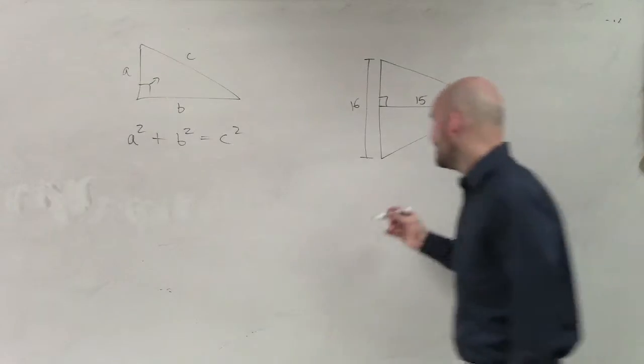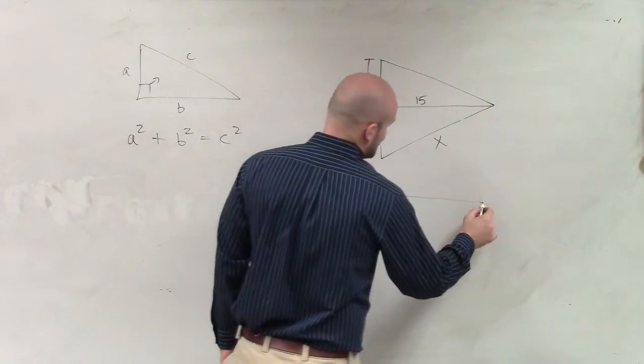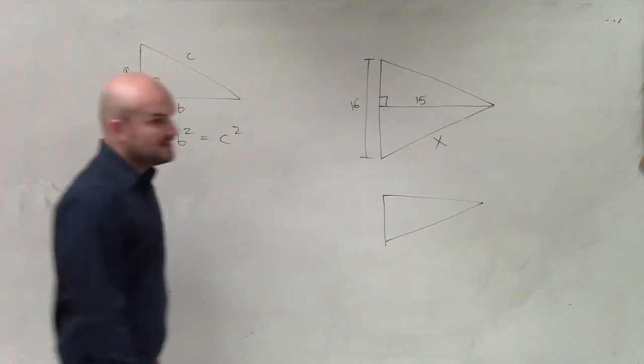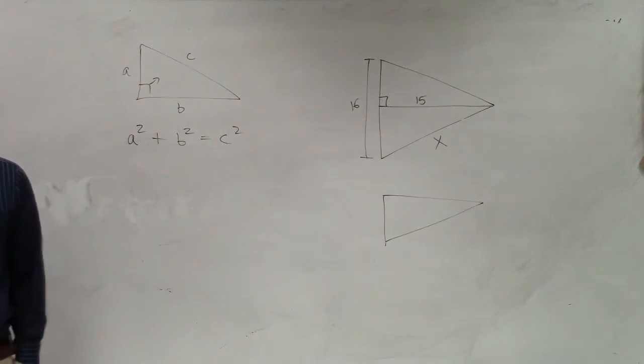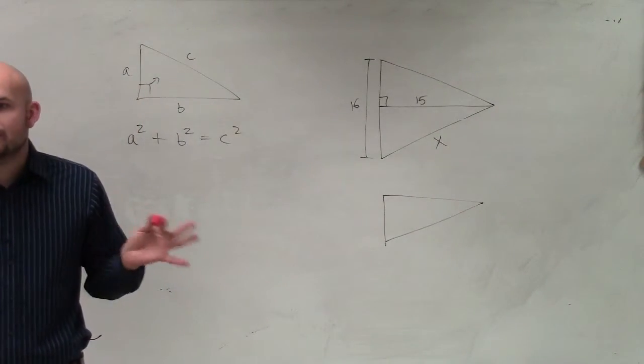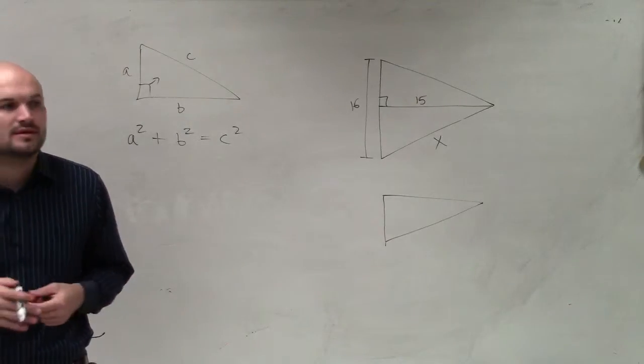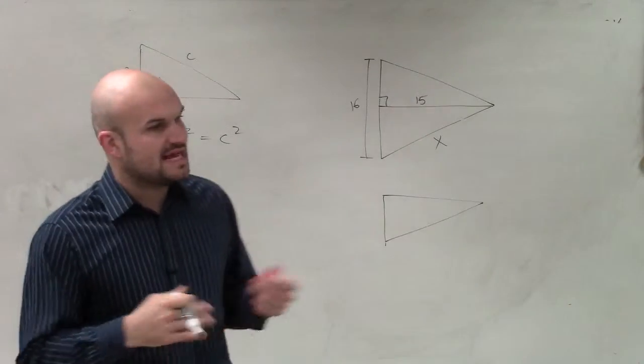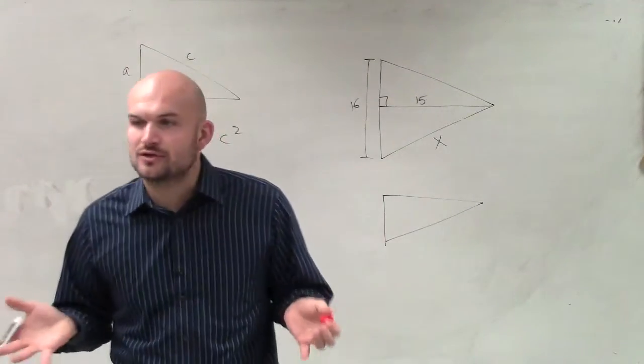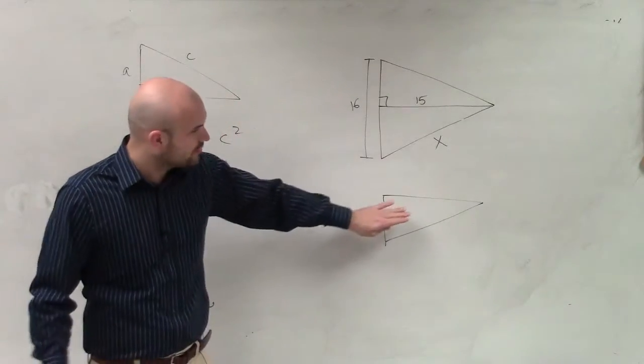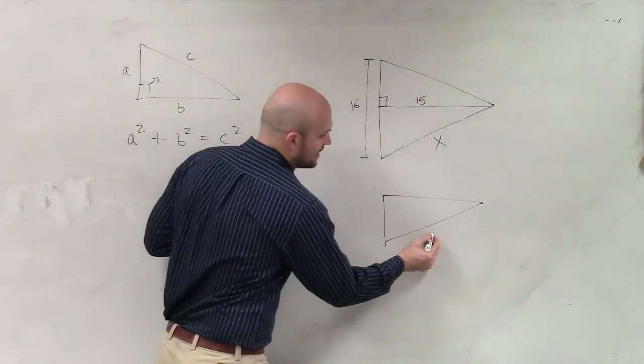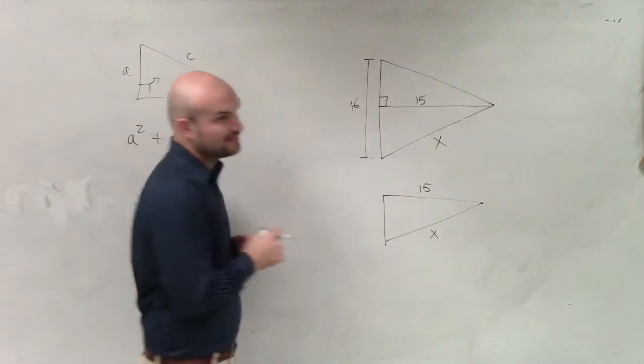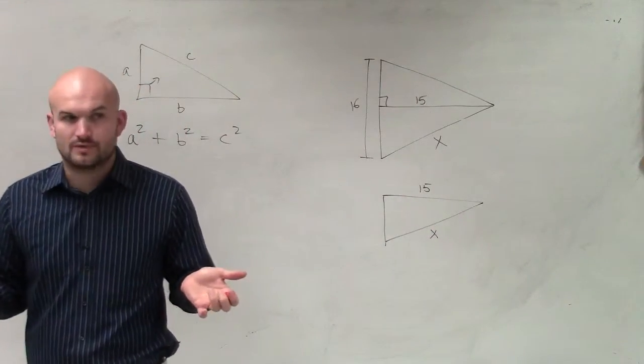So a lot of times in geometry, you're going to have these crazy pictures. And a lot of times what I think is very helpful is just to take that picture out. Flip that over, please. Thank you. So just to take that out and just focus on what triangle you're trying to work with. So we're just trying to work with this one. So the only thing I know right now is x and 15. That's all I know right now.